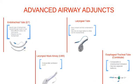Now we will cover the advanced airway adjuncts, which include the endotracheal tube, laryngeal mask airway, laryngeal tube, and esophageal tracheal tubes.